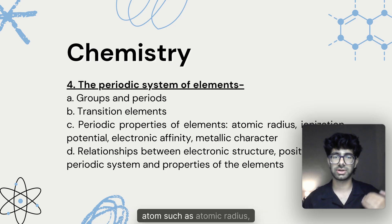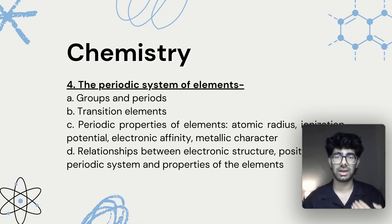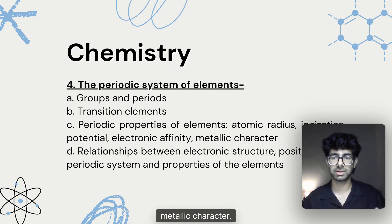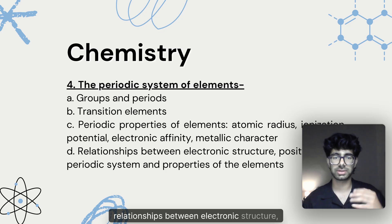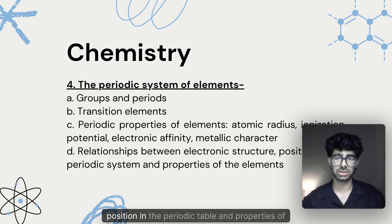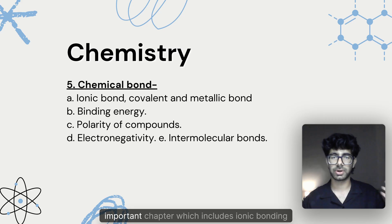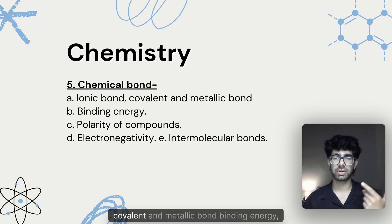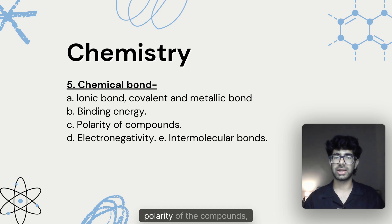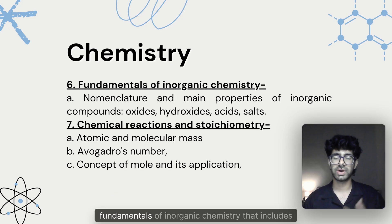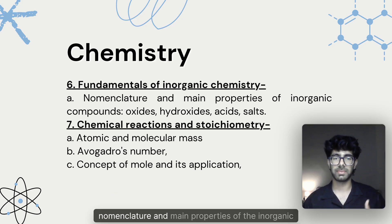The fourth unit is the periodic system of elements, which includes groups and periods, transition elements, and periodic properties of elements such as atomic radius, ionization potential, electronic affinity, metallic character, and relationships between electronic structure, position in the periodic table, and properties of elements. Chemical bonding is another very important chapter, covering ionic, covalent, and metallic bonds, binding energy, polarity of compounds, electronegativity, and intermolecular bonds.